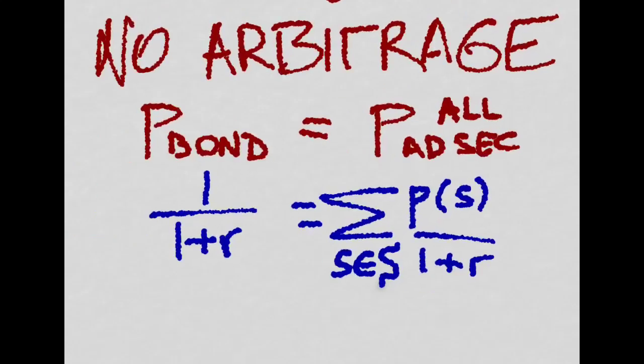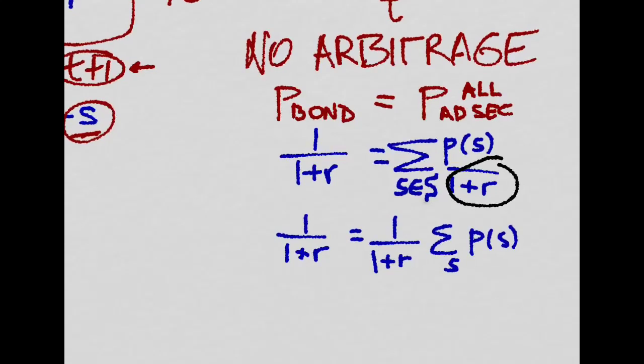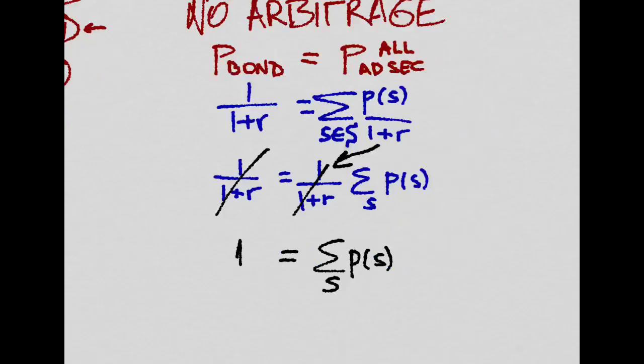Now we can take this out of the sum, and we will see that these two will cancel out. And we will be left with the reduced form of the no arbitrage condition, which says that the sum over all the states of the world of the price of each Arrow-Debreu security has to be equal to 1.